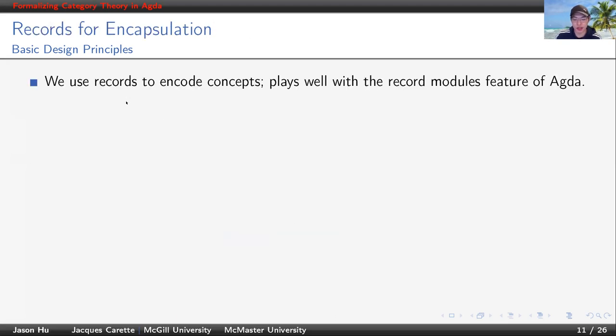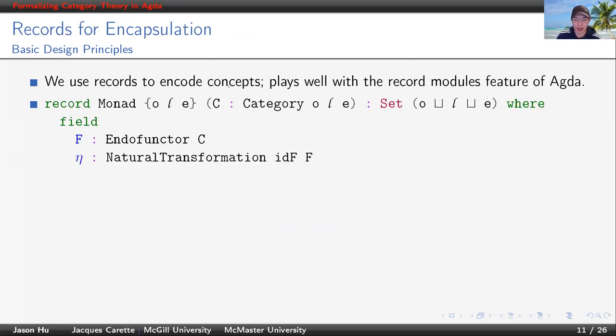Another principle is that we use records to encapsulate concepts. This principle plays well due to the feature of record modules in Agda. Consider this partial definition of a monad in a category C. Among other things, we require a functor F and a natural transformation eta in it.